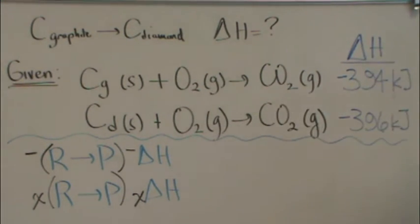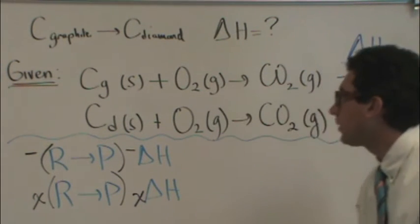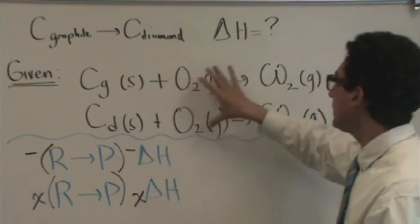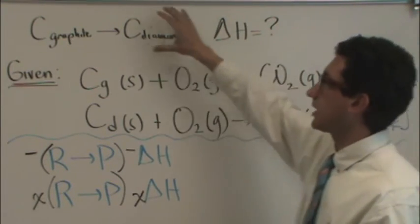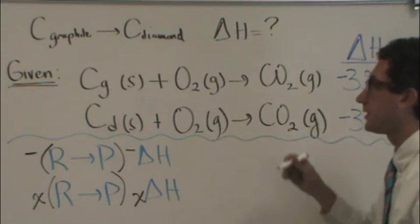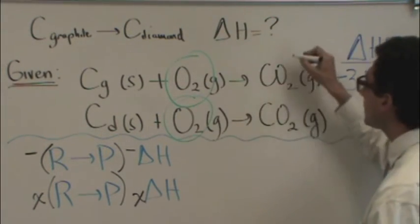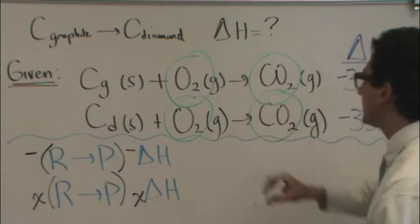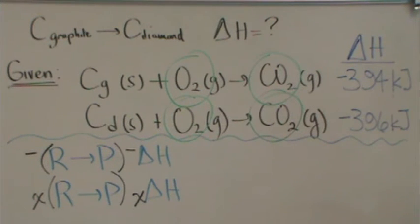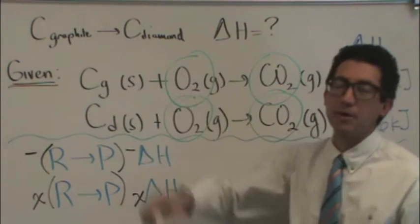All right, so when we look at this question up here, what you're going to notice is a few things. One is any compound that's down here that does not appear in the overall reaction is considered an intermediate. So that would be oxygen's intermediate and CO2 is an intermediate. So you know that those two need to cancel in order to add up to my overall reaction.